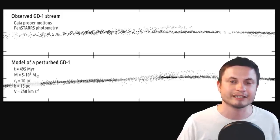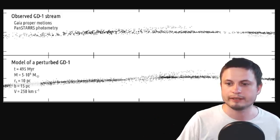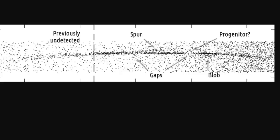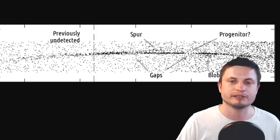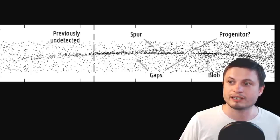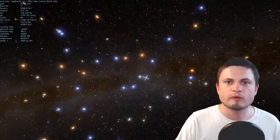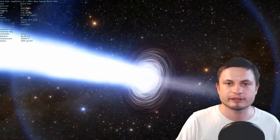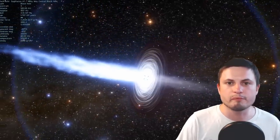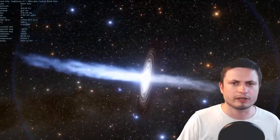The mass of this perturbing object was about 5 million solar masses, about 10 parsecs or approximately 33 light years in radius, moving at about 250 kilometers per second — very similar to Sagittarius A*, the supermassive black hole in the middle of our own galaxy. Looking at the data, there are unusual gaps in the actual stream that are difficult to explain without something massive causing them — perhaps a supermassive black hole or a very large and massive chunk of dark matter.